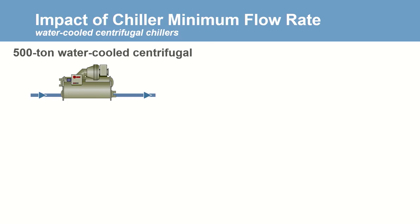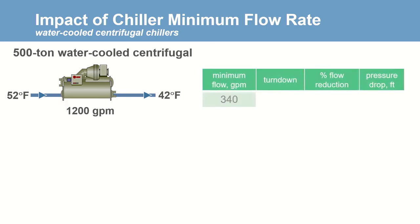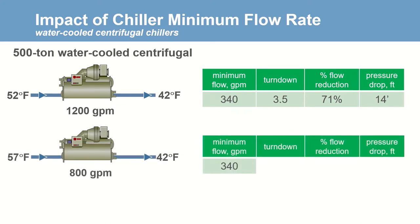To demonstrate, here's a 500-ton water-cooled centrifugal chiller. Most centrifugal chillers are highly configurable. Starting with a basic selection at 10 degree delta T and design flow of 1200 GPM, the minimum flow for this specific chiller is 340 GPM, pressure drop is about 14 feet, and this provides a 3.5 to 1 turndown, or a 71 percent flow reduction. Taking this exact same chiller but running at a 15 degree delta T, the design flow rate reduces but the minimum stays the same, resulting in a turndown of 2.3 to 1, or only a 57 percent flow reduction.